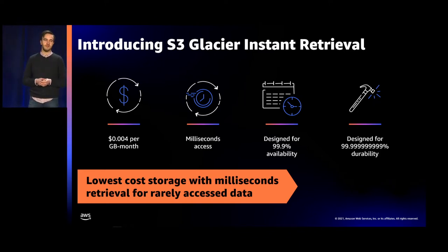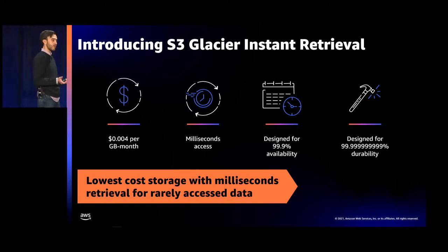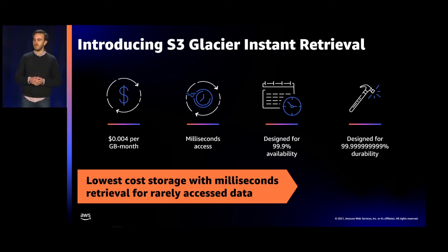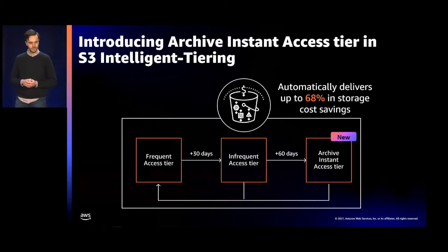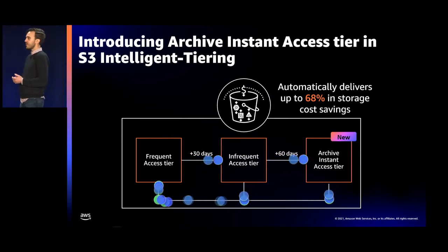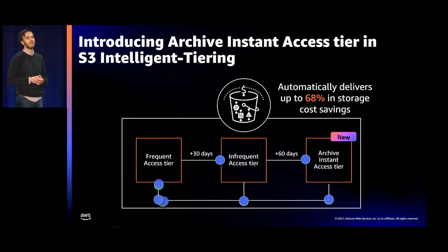Like S3 Standard Infrequent Access, it's designed for 99.9% availability with 11 nines of data durability, by redundantly storing data across a minimum of three physically separated AWS availability zones. It's easy to get started — you can upload data directly to the storage class or use S3 lifecycle policies to move data from S3 Standard or S3 Standard Infrequent Access into S3 Glacier Instant Retrieval. Second, with the launch of S3 Glacier Instant Retrieval, we're also introducing a new access tier into the S3 Intelligent Tiering storage class.